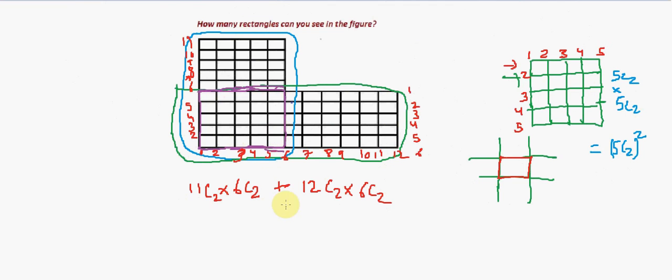So we need to subtract. The number of vertical lines here is six, and the horizontal lines are one, two, three, four, five, and six. Minus 6C2 into 6C2. This will take care of one unique occurrence of all the rectangles. And now we can take 6C2 common. We have 11C2 plus 12C2 minus 6C2.